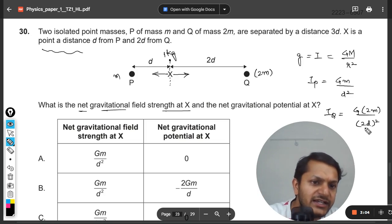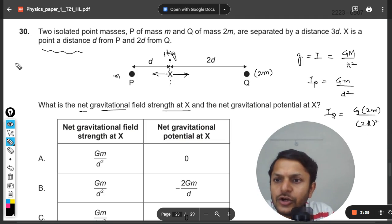So we can say that they would be attracting each other, so we would be subtracting this. Clearly this is 2 divided by 4, so this is going to be lesser than this. So it is going to be Ip minus Iq.